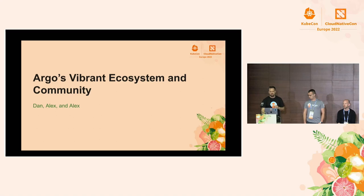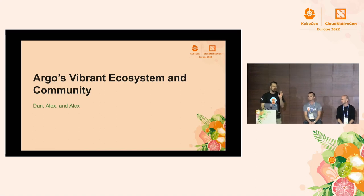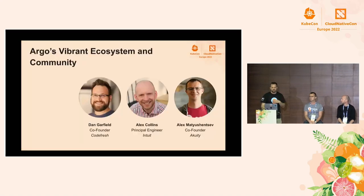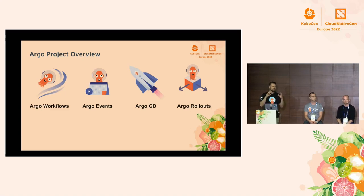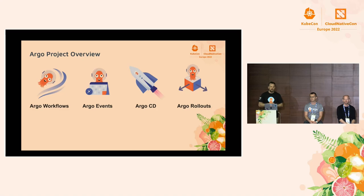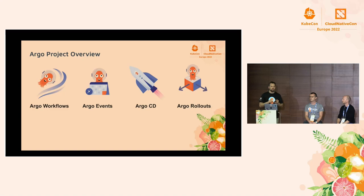We're going to be talking about this amazing, vibrant ecosystem that has been growing dramatically. There are a lot of opportunities for you as community members to join in. There are four main tools. There's Argo Workflows, which is an incredibly powerful general-purpose workflow engine for Kubernetes. Argo Events, which is typically used for triggering workflows. Argo CD is the world's most popular and fastest-growing GitOps engine today. And Argo Rollouts is one of the easiest, quickest ways to get started with progressive delivery, canary releases, and blue-green deployments.